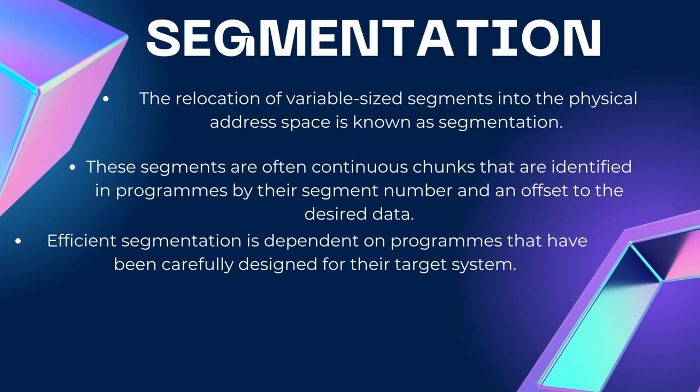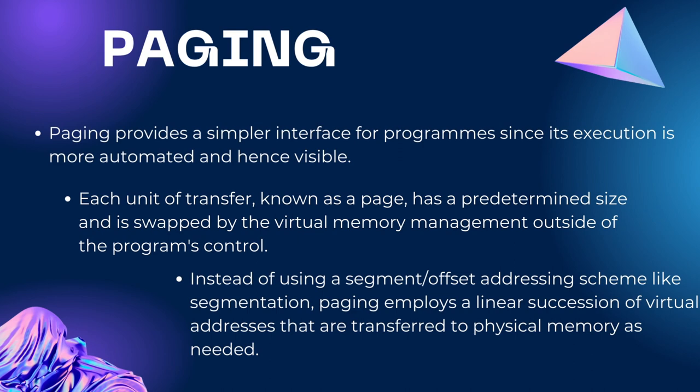Another method is paging. What is paging? Paging provides a simpler interface for programs since its execution is more automated and hence less visible. The basic difference between segmentation and paging is how memory is divided. However, the processes can also be combined — in this case, memory gets divided into frames or pages, segments take up multiple pages, and the virtual address includes both the segment number and the page number.